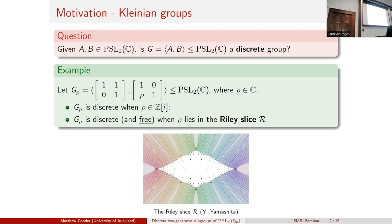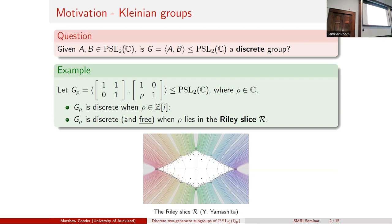There's a lot going on in this picture. This picture is actually of things called pleating rays, which is what Yeroen and Gavin and one of the master's students have been working on. These lines in complex space are parameterized by polynomials, and as you come in you're defining a sequence of complex numbers ρ which will define discrete and free subgroups of PSL₂(ℂ). For every ρ outside the Riley slice, we know those groups are discrete and free.